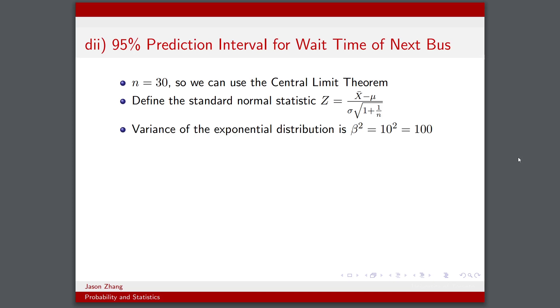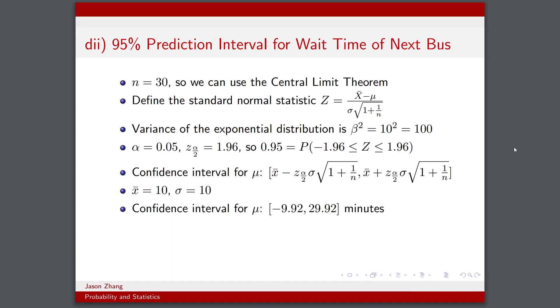Again, we have the same variance as part 1. The way we set up the interval is very similar, except there's an extra term in the square root. And so when we plug in our values for this confidence interval, we end up getting a much larger interval. In fact, it starts at -9.92 minutes and it goes up to 29.92 minutes.